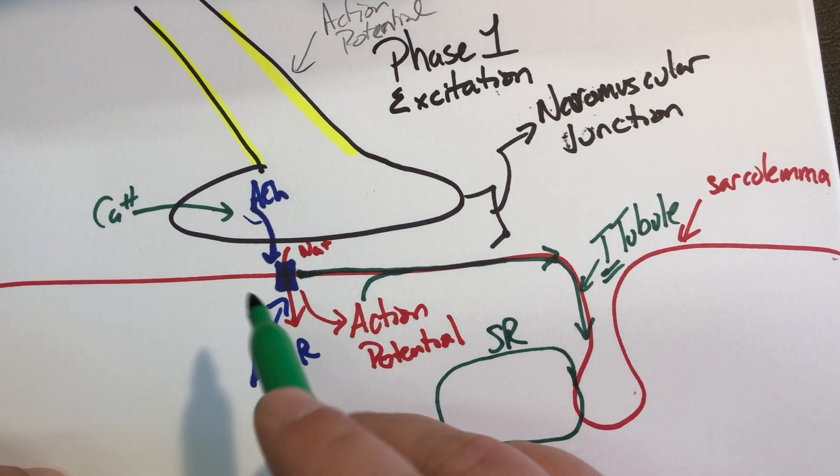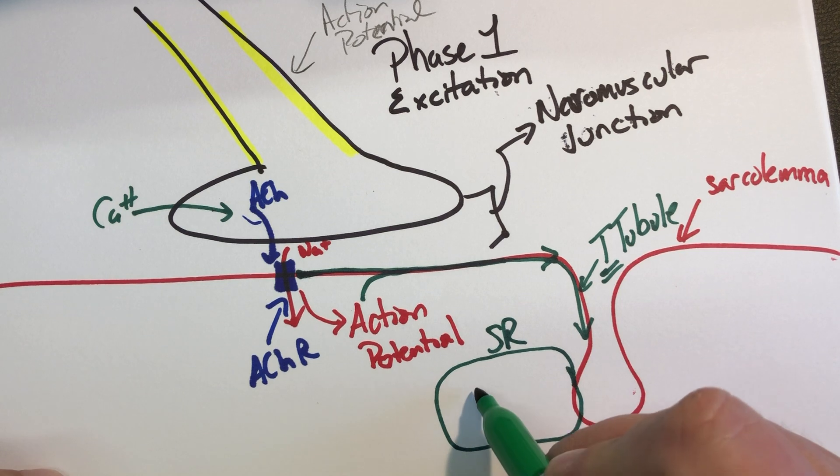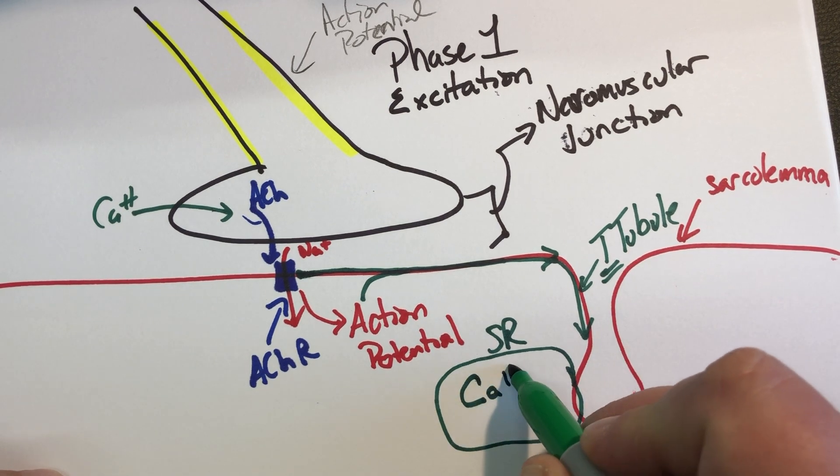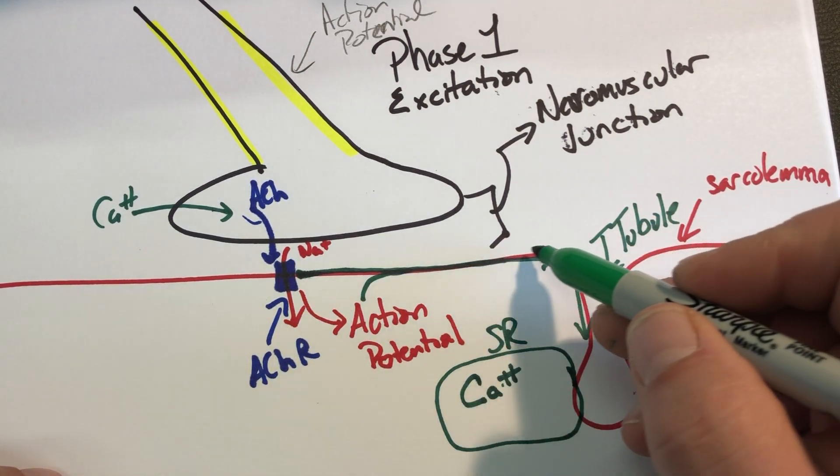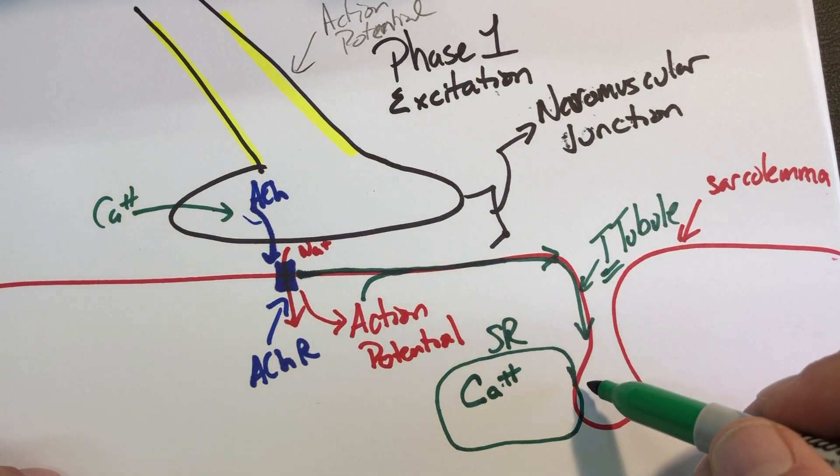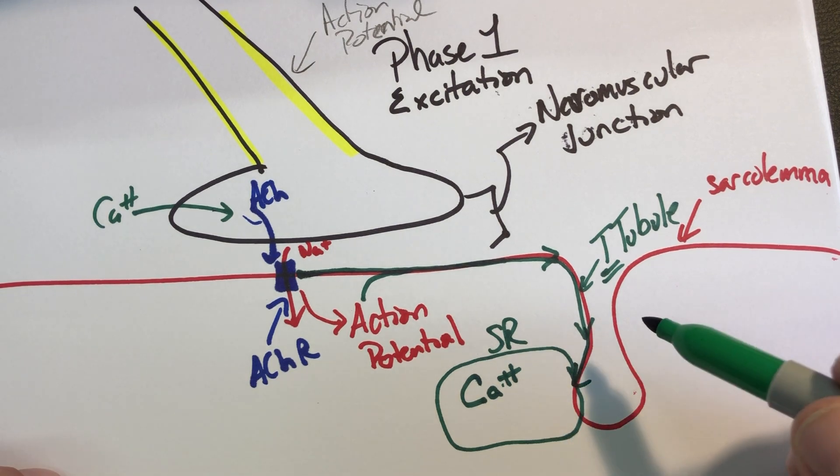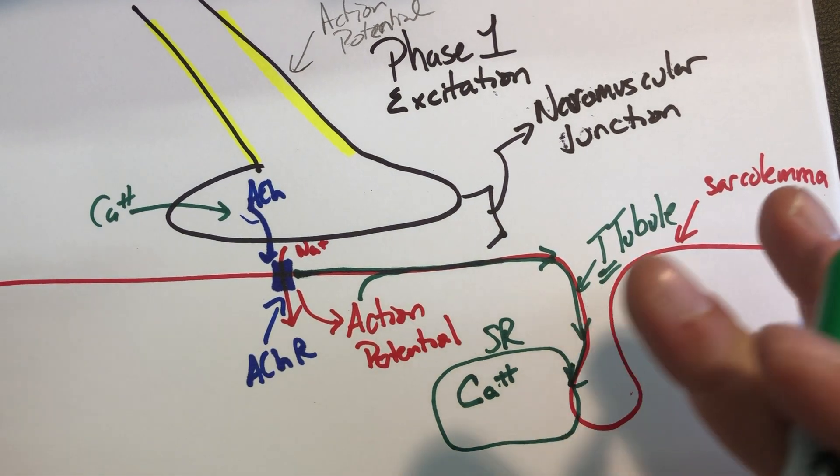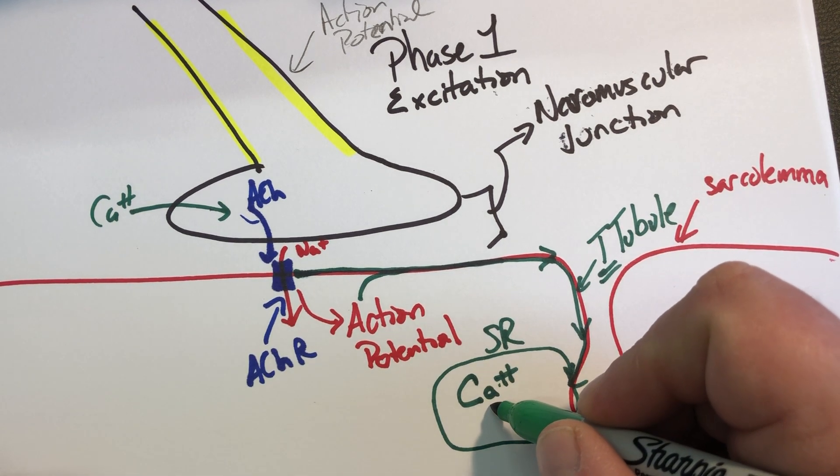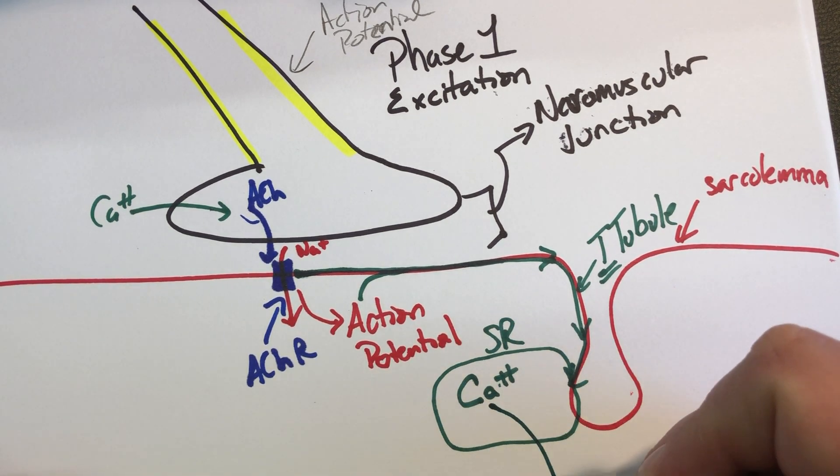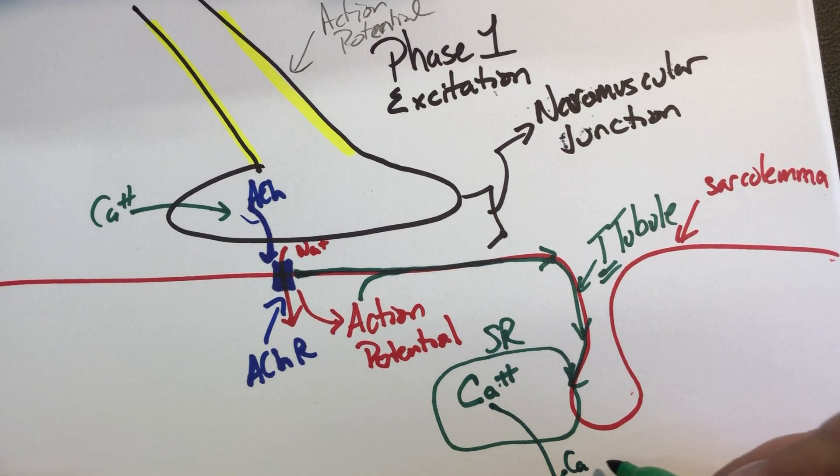All right. We've already talked about it before. Up here, in the sarcoplasmic reticulum, there is a ton of calcium built up. And so as this depolarizing wave comes down the T-tubule, it eventually depolarizes the sarcoplasmic reticulum. And this is kind of the end of the excitation phase. But the end of that excitation phase happens as calcium is released.